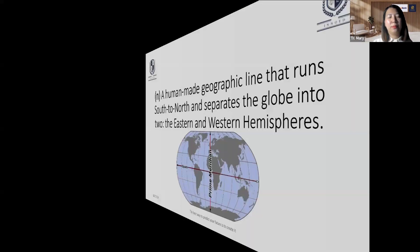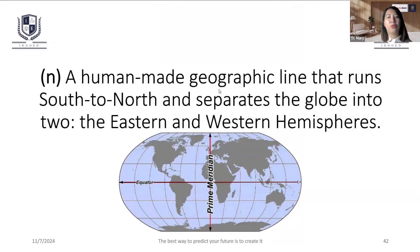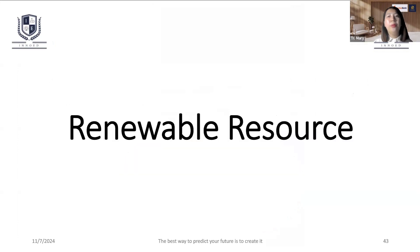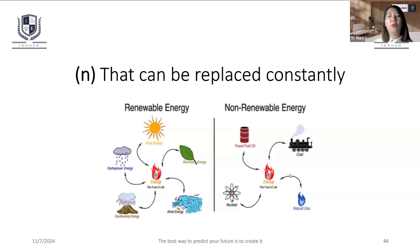Prime Meridian. Renewable resource. Renewable resources are necessary for renewables. When we talk about the solution, we have a solution to renewable energy. When we talk about renewable energy, we will talk about solar energy.